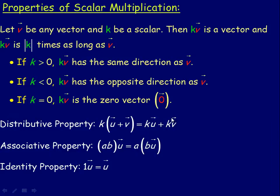Here are some properties of scalar multiplication. If v is any vector and k is a scalar — a real number — then kv is a vector, and kv is the absolute value of k times as long as v. Negative 3v is 3 times as long as v and in the opposite direction. If k is greater than zero, then kv has the same direction as v. If k is less than zero, then kv has the opposite direction to v. And if k is zero, then kv is the zero vector.